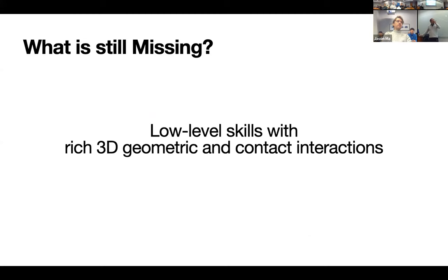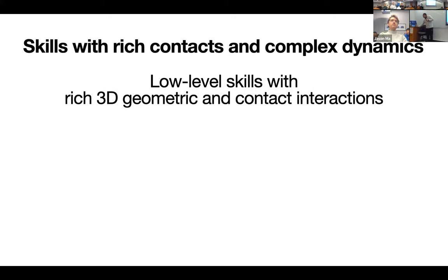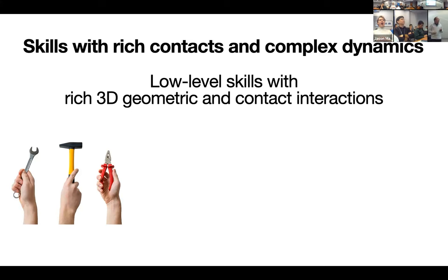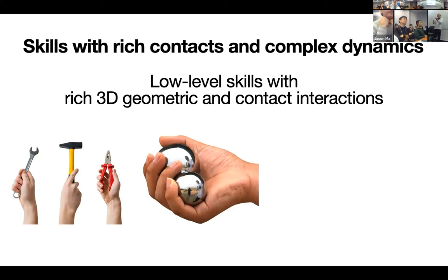We want the robot to have skills like humans do — going beyond pick-and-place. Can we use daily life tools? For example, grasping a hammer is not just about grasping — it's about reorienting it in the right direction and using it. With a scissor, you also want to operate it correctly. A very important skill is doing things in-hand: reorienting objects in hand is actually the number one step before using all the fancy tools we have.